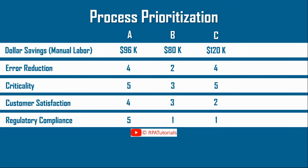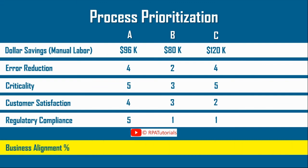The next step is to calculate a business goal alignment percentage. Use the weights defined for each of the focus areas defined earlier to calculate the same. The aggregate percentage calculated shows a closer alignment of process A to the organization's existing business priorities. Some organizations also take absolute dollar savings as the primary driving factor for prioritizing processes for automation. In this case, process C would then be prioritized over others for automation.